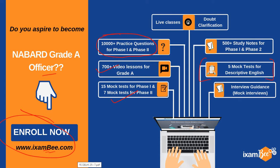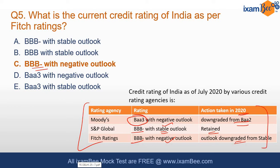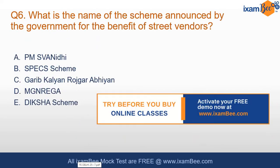For S&P and Fitch, India's rating is BBB- (triple B negative). Moody's says Baa3. The outlook as per Fitch and Moody's is negative, while S&P says stable outlook. In 2020, Moody's downgraded the rating, S&P retained its outlook, and Fitch downgraded the outlook from stable to negative — remember all of these for the exam.